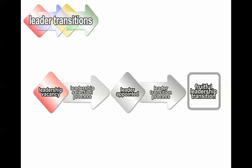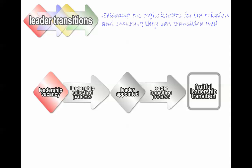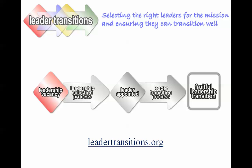The second toolkit is the Leader Transitions Toolkit. Leaders around the world have been crying out for an effective standard process to help ensure that we can select the right people for needed leadership roles. The Leader Transitions Toolkit combines the leadership selection process with the Leader Transition process to help us select the right leaders for the mission and ensure that they can transition well. You can locate this toolkit at leadertransitions.org.